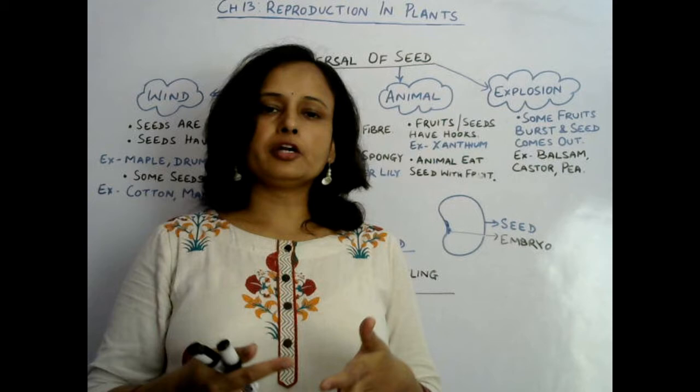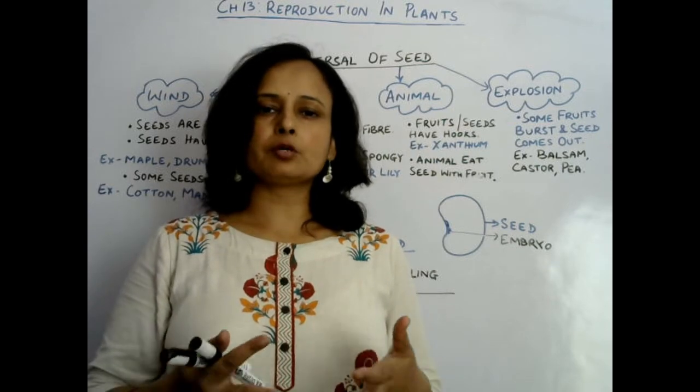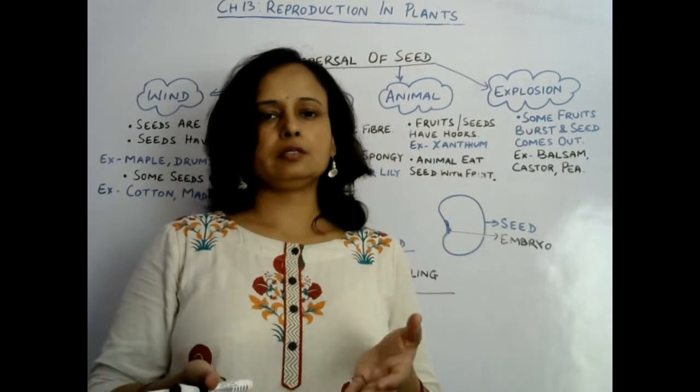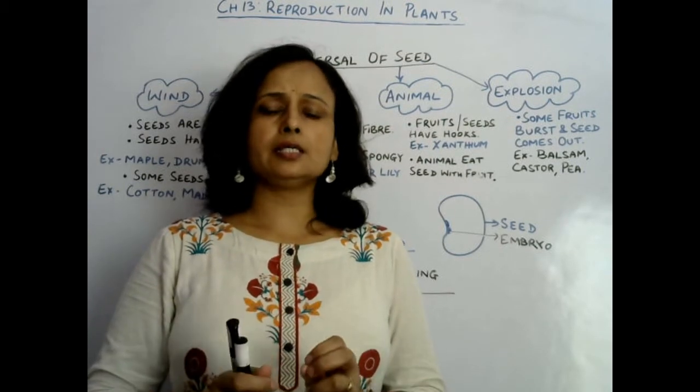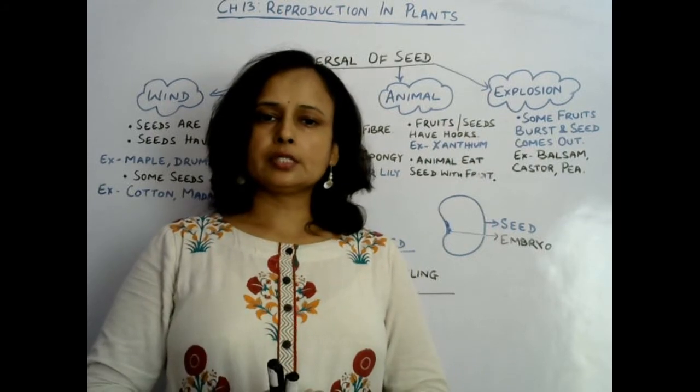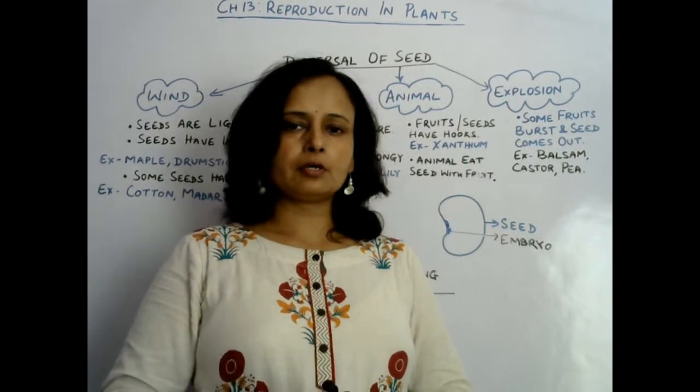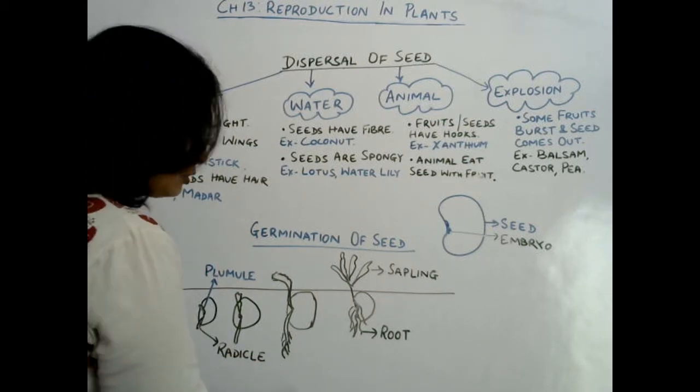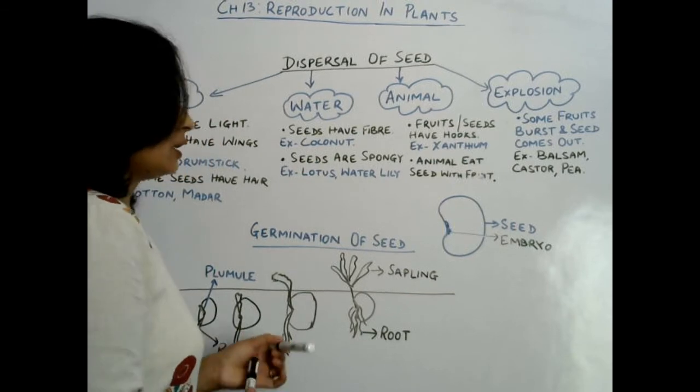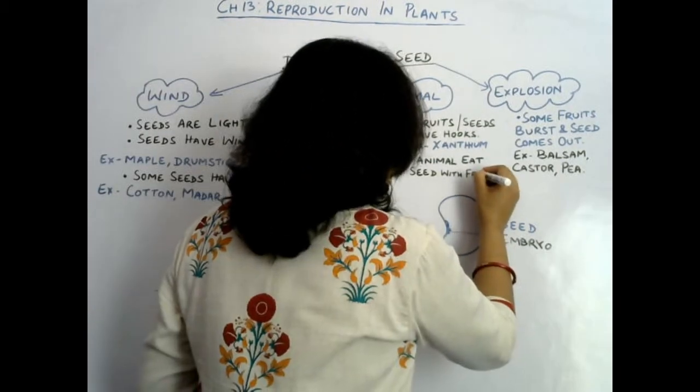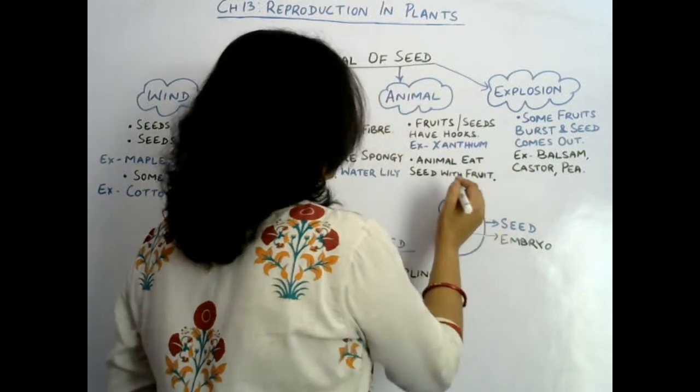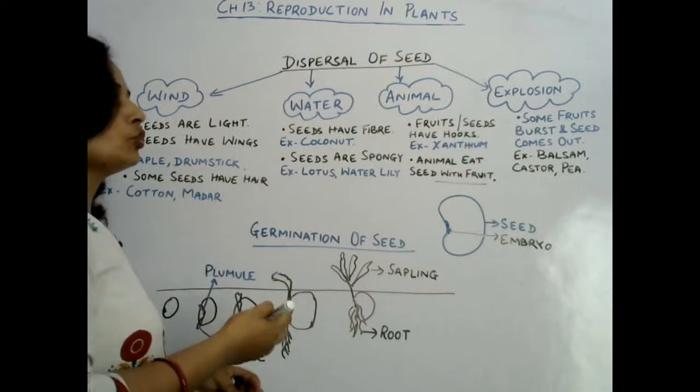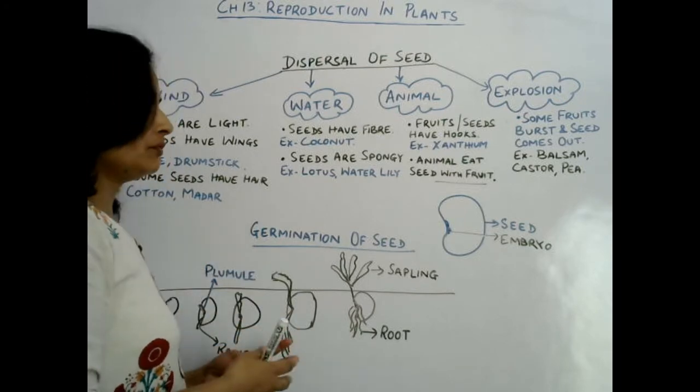Animals not only eat plants and leaves, but also eat fruits. They can digest those fruits, but the seeds are not easily digested. Those seeds come out from the body of the animal through its fecal matter. Such seeds which come out from the fecal matter can grow into new plants in different places.